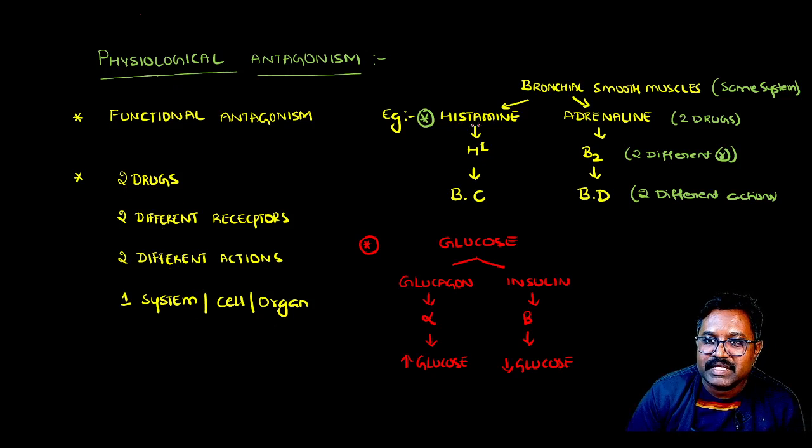The classical example is histamine and adrenaline on the bronchial smooth muscles. They act on H1 receptor and beta-2 receptor with agonistic action, causing bronchoconstriction and bronchodilation respectively.